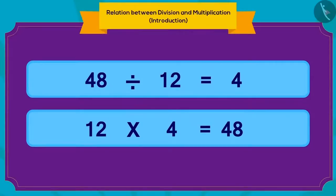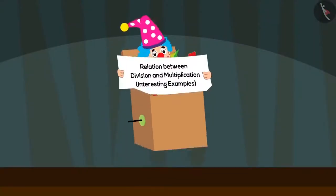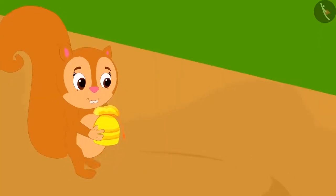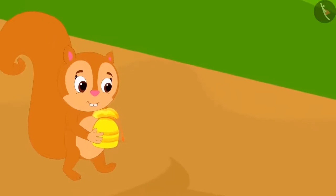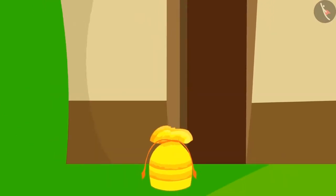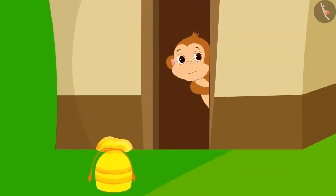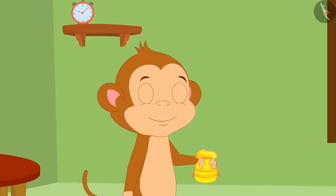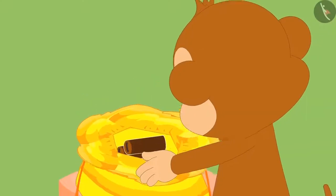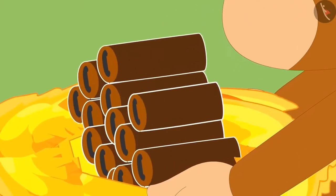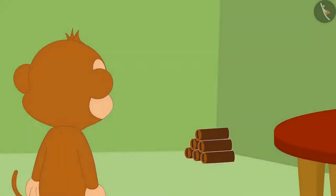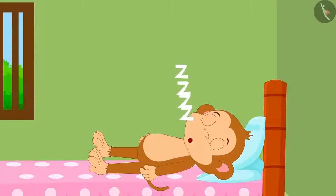Hello children. In the previous video, we learned about the relation between division and multiplication. In this video, you will see some interesting examples related to this. In the last video, we saw how Chanda had quietly left her third pouch outside Babban's door. When Babban opened the pouch, he found some wooden sticks in it.